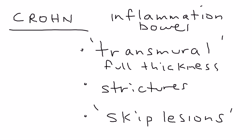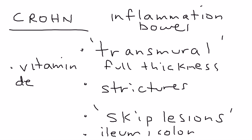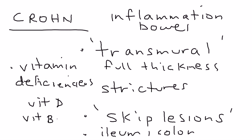Another important point: Crohn's disease can happen anywhere — not just in the large intestine. It can occur in the ileum, the colon, and the small intestine, unlike ulcerative colitis which is limited to the colon. Additionally, Crohn's can lead to vitamin deficiencies, particularly vitamin D and vitamin B12 — both are commonly tested on licensing exams.